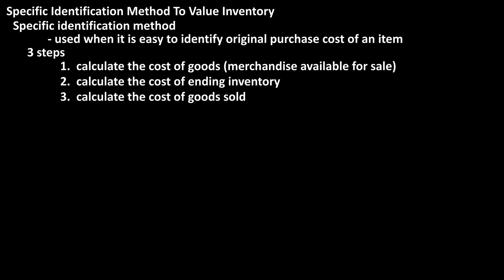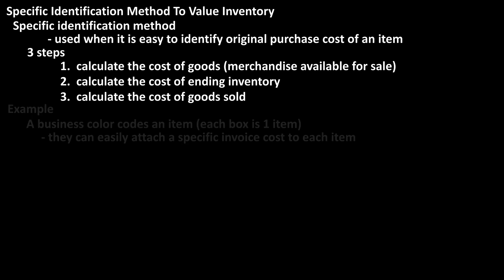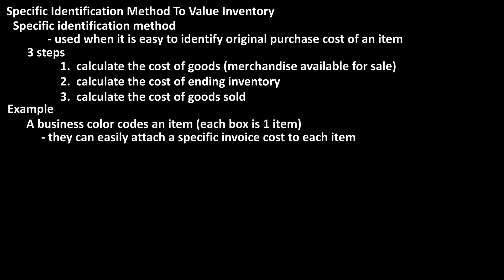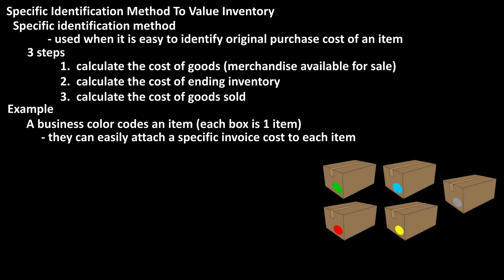Let's go through a very basic example of this to value inventory. Let's say that a business sells a particular item and color codes the boxes as they come into the store. This way they can easily attach a specific invoice cost to each item.